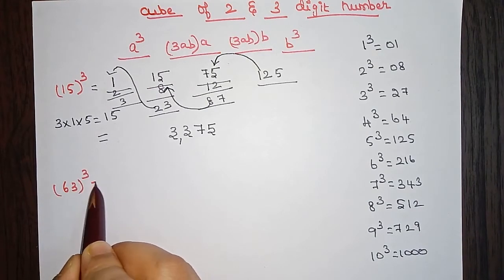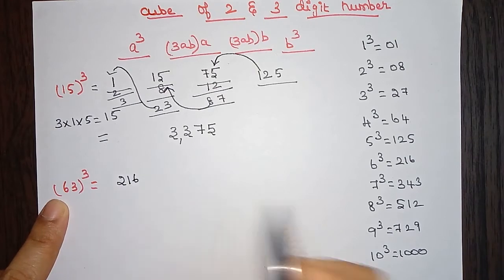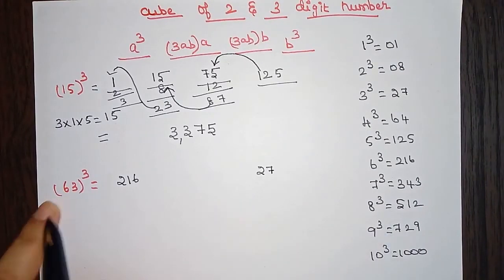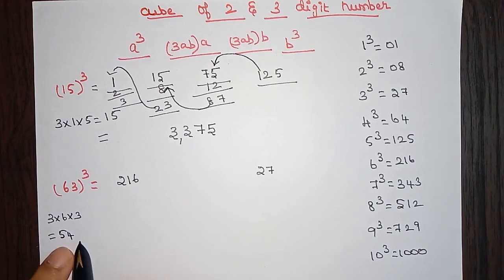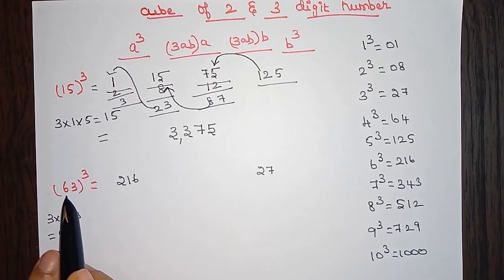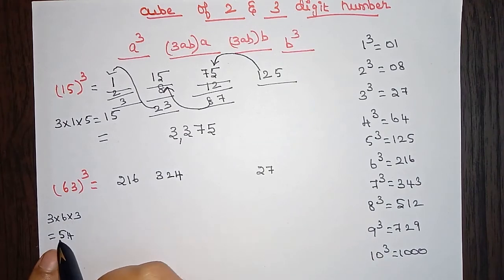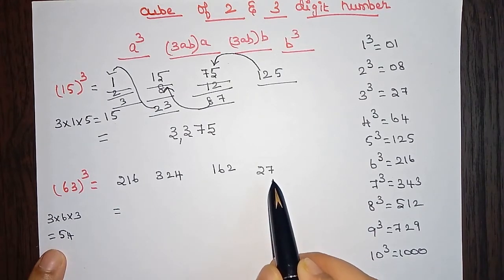In the same way, let's take the example 63 cube. First we find the cube of 6, which is 216, and the cube of 3, which is 27. Now we find 3 into 6 into 3: 3 threes are 9, 9 sixes are 54, so the common term 3ab is 54. Now we multiply 54 by a: 54 into 6 gives 324. Then multiplying 54 by 3 gives 162.